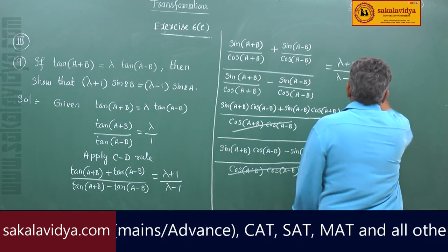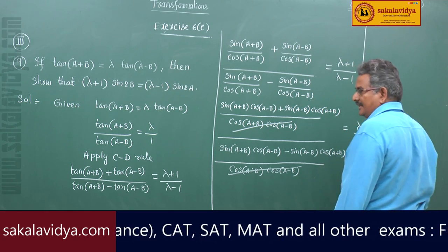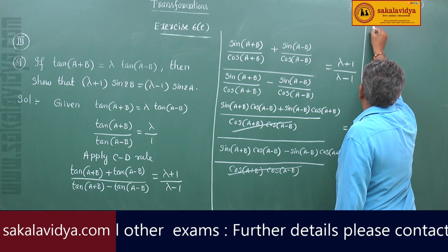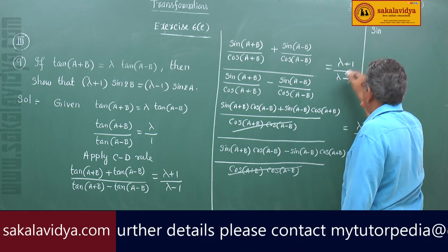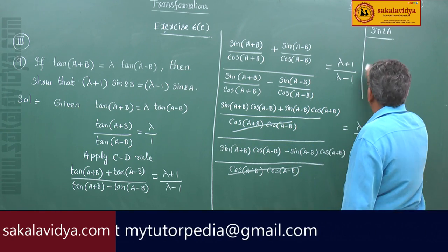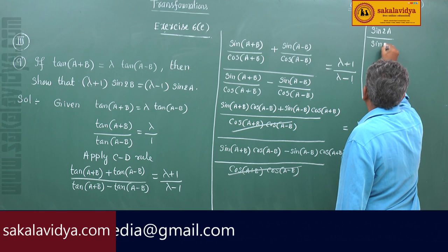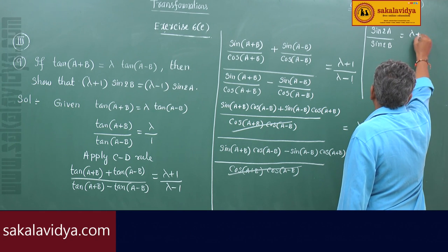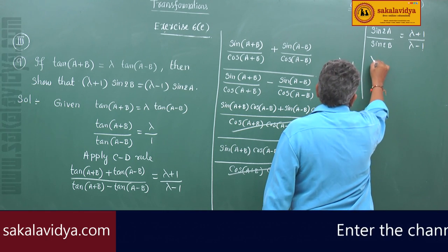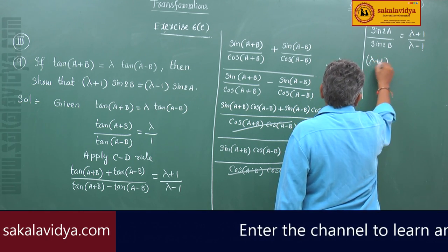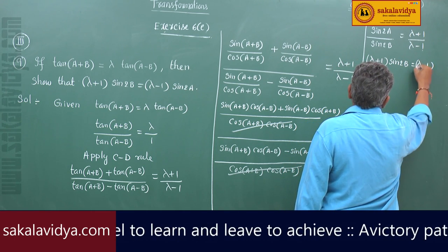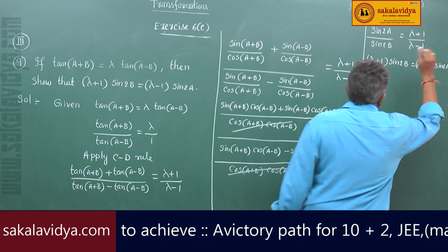Using sum-to-product: sin(A+B)·cos(A-B) + cos(A+B)·sin(A-B) equals sin(2A), and sin(A+B)·cos(A-B) - cos(A+B)·sin(A-B) equals sin(2B). So sin(2A) by sin(2B) equals (λ+1)/(λ-1). By cross multiplication, (λ+1)·sin(2B) equals (λ-1)·sin(2A).